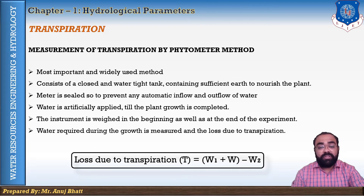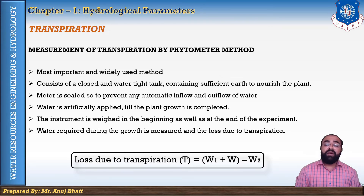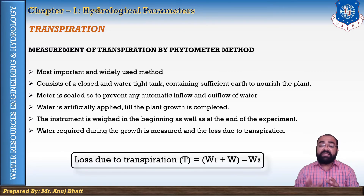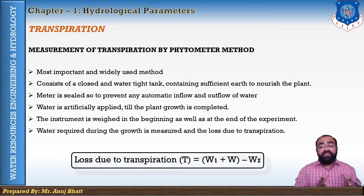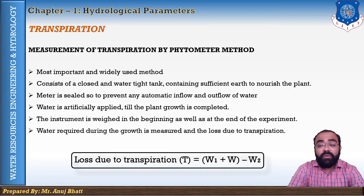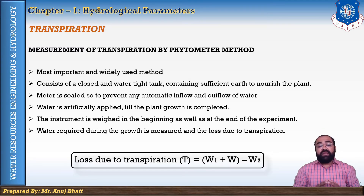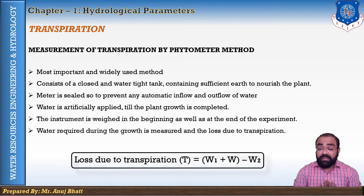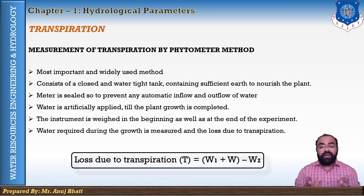In this equation, T is the total loss due to transpiration, W1 is the initial weight of the instrument with the water, W is the total weight of water applied during the full growth of the plant, and W2 is the final weight of the instrument. The transpiration loss calculated by this equation is not the actual value in the field, but only the value examined in the laboratory through practicals.